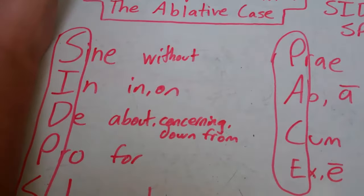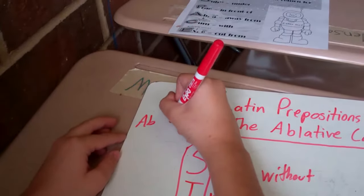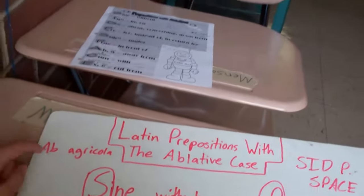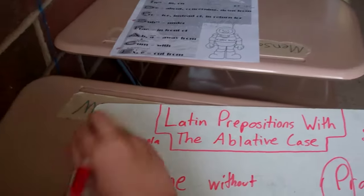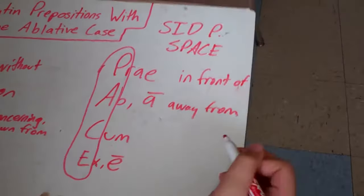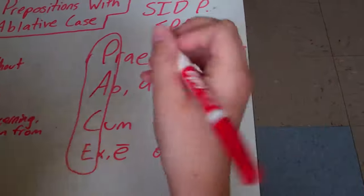If the word starts with a vowel, you would do ab, like ab agricola, because you have to have this consonant before the vowel. And then the same thing for ex or e, that means out from. And cum means with.